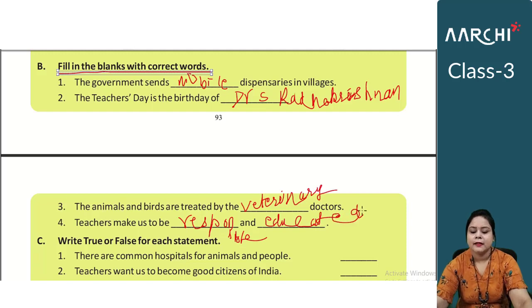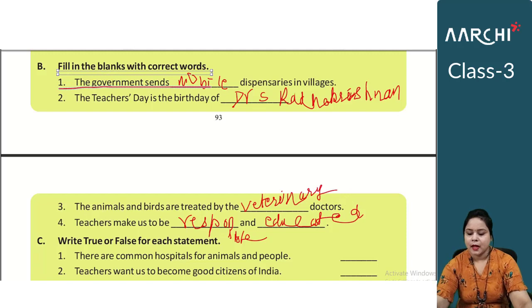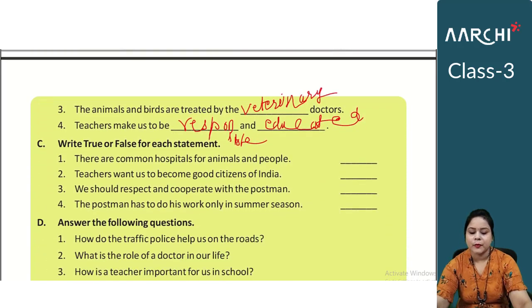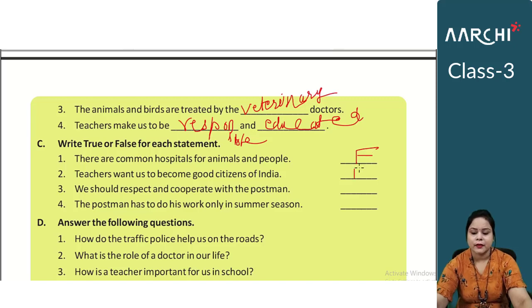Section C: Write true or false for each statement. First — there are common hospitals for animals and people. False. Second — teachers want us to become good citizens of India. True. Third — we should respect and cooperate with the postman. True. Fourth — the postman has to do his work only in summer season. False.